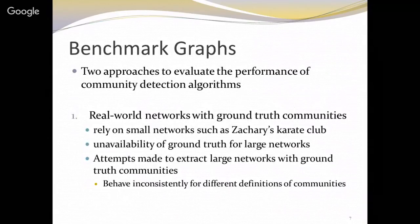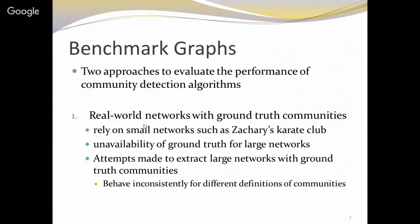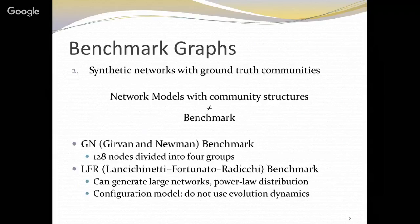If you want to evaluate the performance of a community detection algorithm, there can be two approaches. We can run any community detection algorithm against a real-world dataset with prior information about the ground truth communities. However, we have to rely on small datasets such as the Karate Club dataset. One problem is unavailability of ground truth for large networks, and another is that how to define those communities is actually an issue — these ground truth communities behave inconsistently for different definitions of communities.